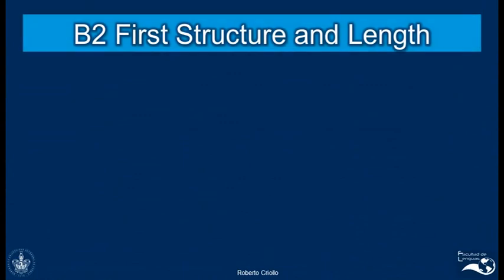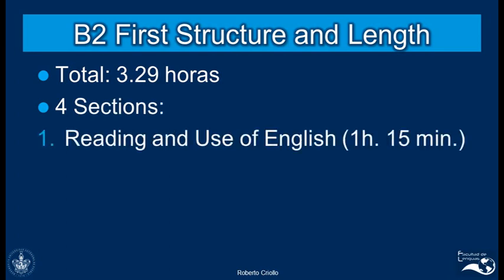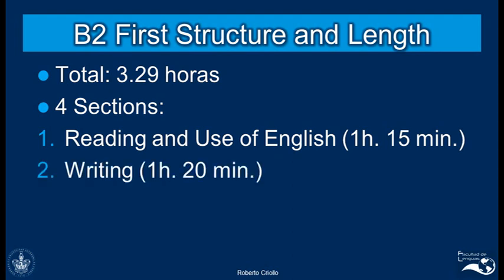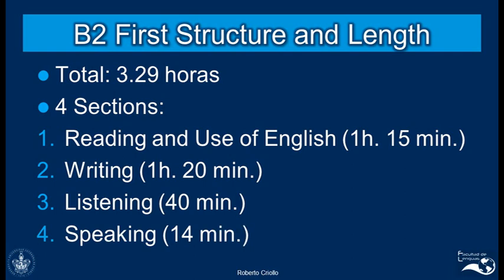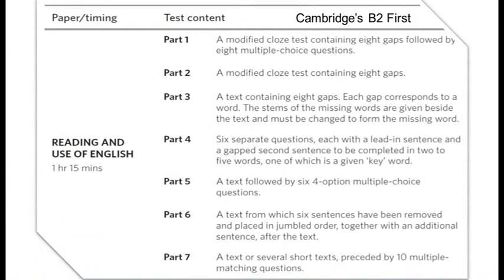Let's look at the structure and length of the test. The total length is 3 hours and 29 minutes — about three and a half hours — and it has four sections. First, the Reading and Use of English part lasts one hour and 15 minutes. Second, Writing lasts one hour and 20 minutes. Third, Listening lasts about 40 minutes. Fourth, the Speaking interview is given on a separate date and lasts 14 minutes. There are seven parts in the Reading and Use of English section: part one focuses on reading comprehension; parts two, three, and four cover language use — grammar, vocabulary, and discourse; parts five, six, and seven focus again on reading comprehension.